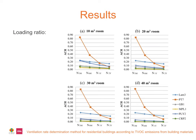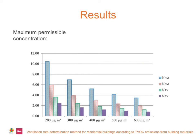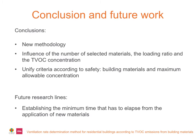When modifying the volume in 10, 20, 30, and 40 cubic meters, the loading ratio varied as well, and also the air exchange rate needed. The figure shows the decrease in the calculated ventilation rate when considering less restrictive requirements, which accept a higher maximum concentration.